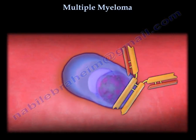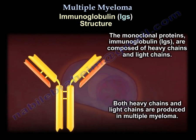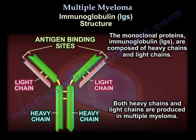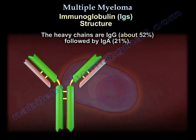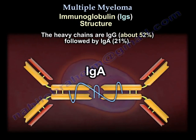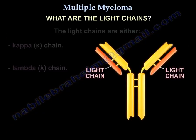Monoclonal proteins are immunoglobulins. They are composed of heavy chains and light chains, and both are produced in multiple myeloma. The heavy chains are IgG (52%) and IgA. The light chains are Kappa or Lambda.